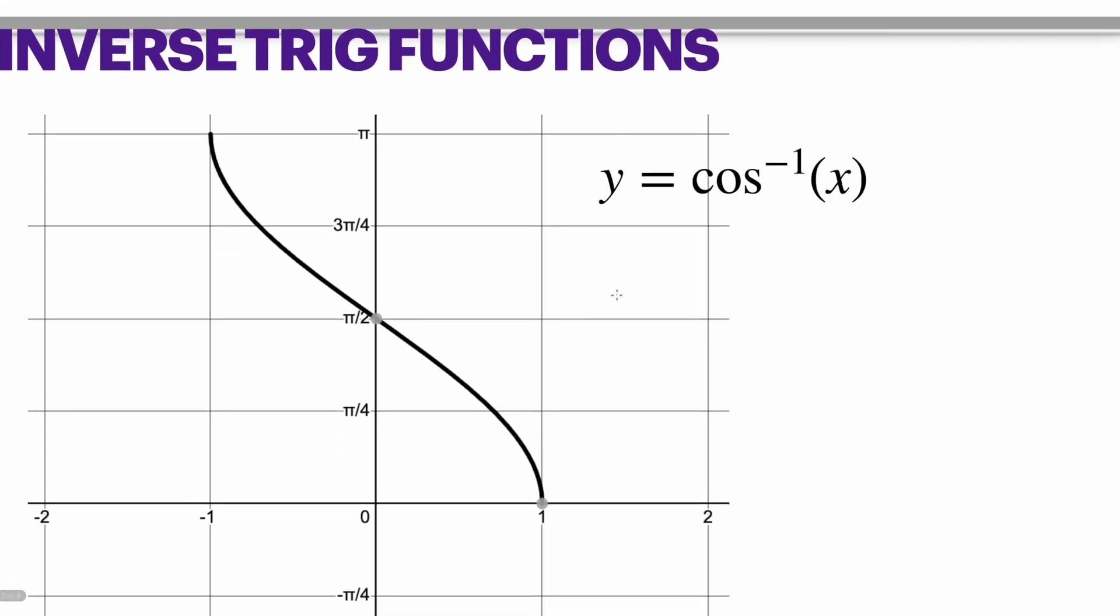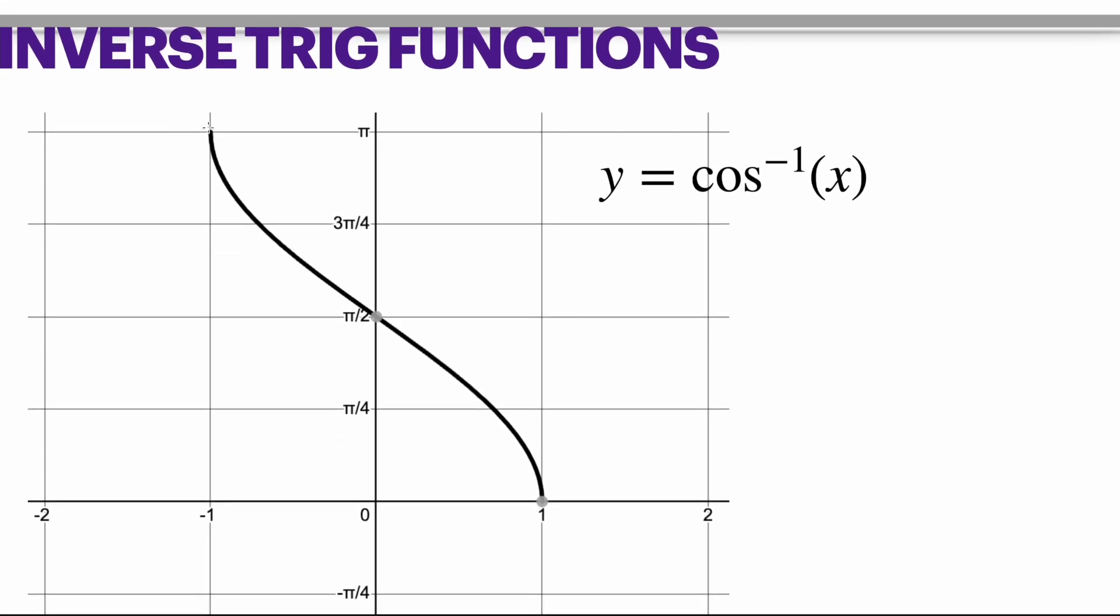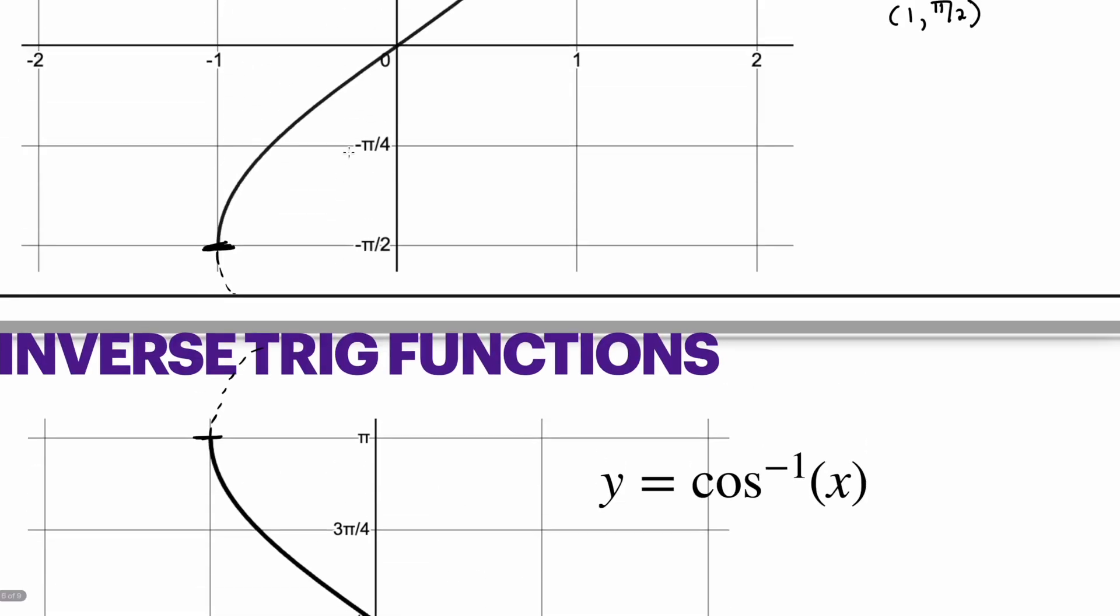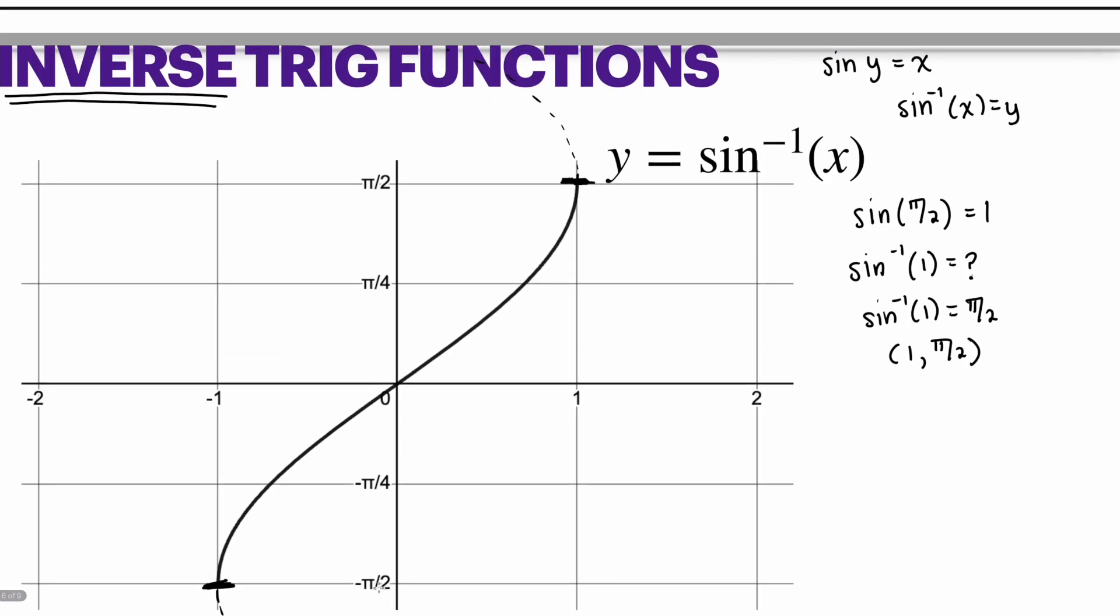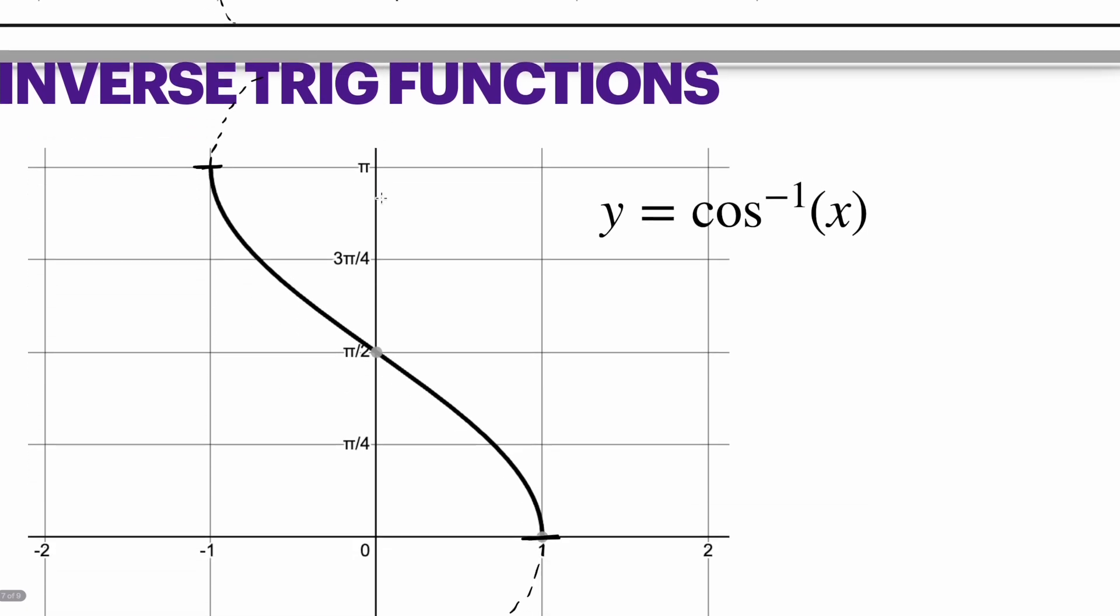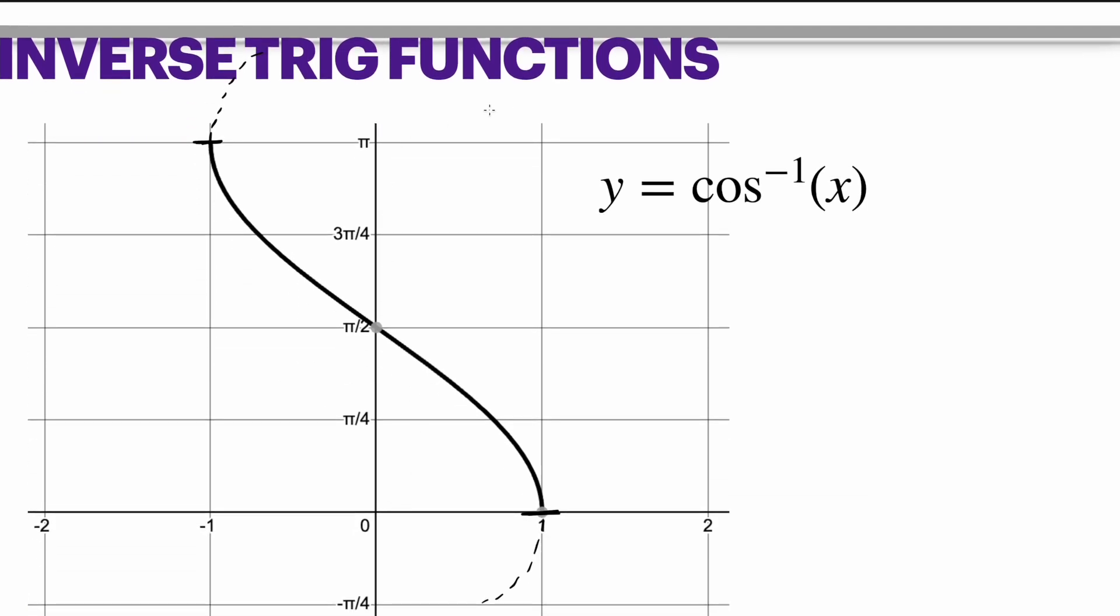Same thing with cosine. The cosine function would normally keep going as a wave function, but again, that means if you create a vertical line test, it would fail. So a cosine function inverse will stop from 0 to π. The sine function goes from negative π/2 to π/2. The cosine function goes from 0 to π.